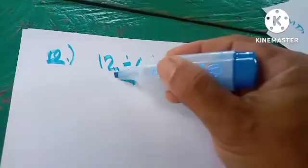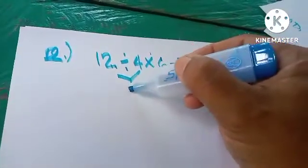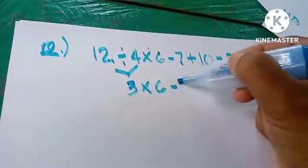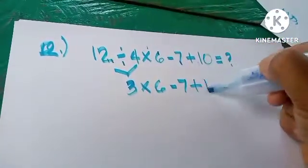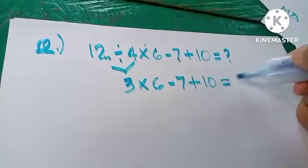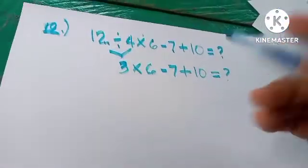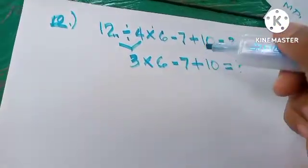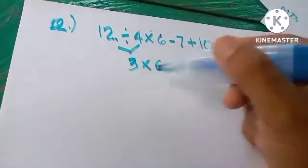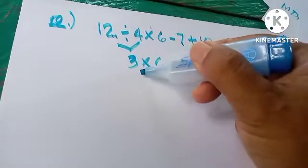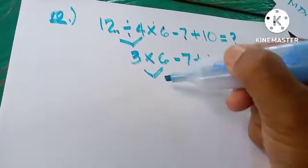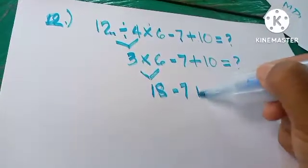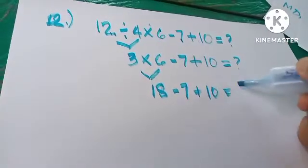So let's divide now. 12 divided by 4 gives us 3. Then 3 times 6 minus 4 — we simplify one at a time. The remaining operations are multiplication, subtraction, and addition. So let's multiply: 3 times 6 gives us 18. So we have 18 minus 7 plus 10 equals blank.